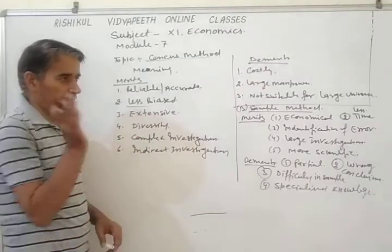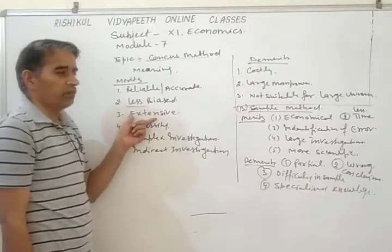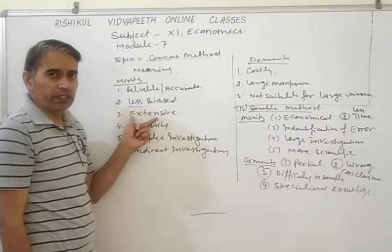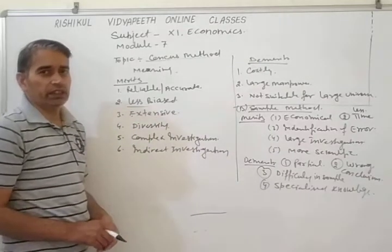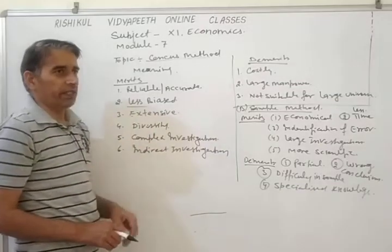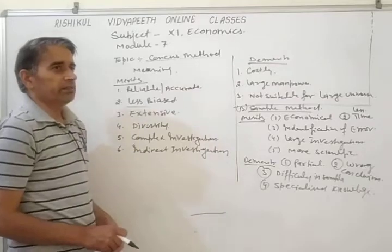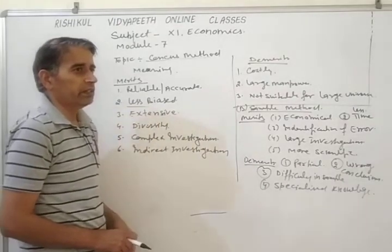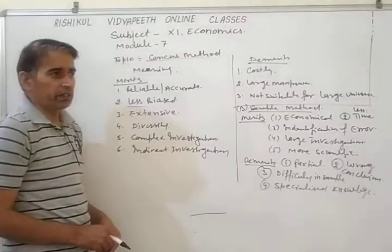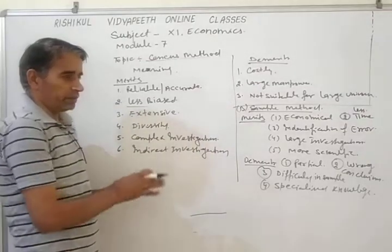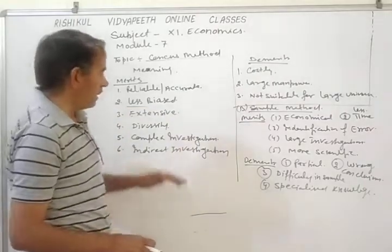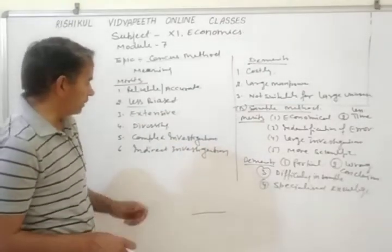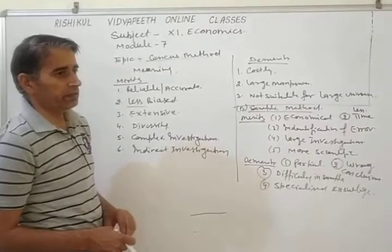Next is extensive. Extensive means some detailed information is collected. Under this method, when we collect information about a specific purpose, some additional information is also simultaneously collected. For example, under the census method when we count the population of India, along with the number of people we also count how many are literate, how many are illiterate, how many are women, men, and children. Different types of information are simultaneously collected.